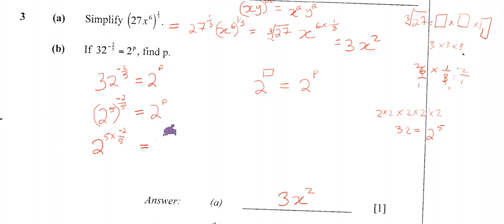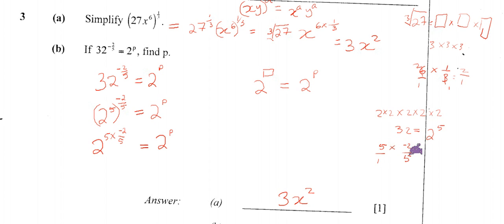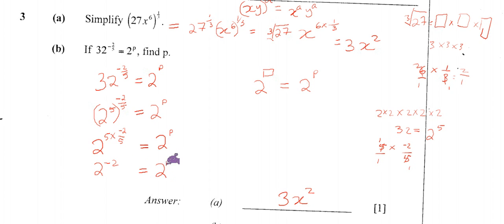It's equal to 2 to the power P on the other side. We figure out 5 multiplied by minus 2 over 5: that is 5 over 1 times minus 2 over 5. By cross multiplication, 5 into 5 is 1, giving us minus 2. So this gives us 2 to the power minus 2 equal to 2 to the power P.